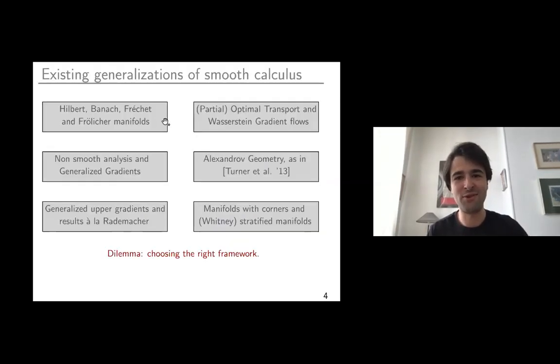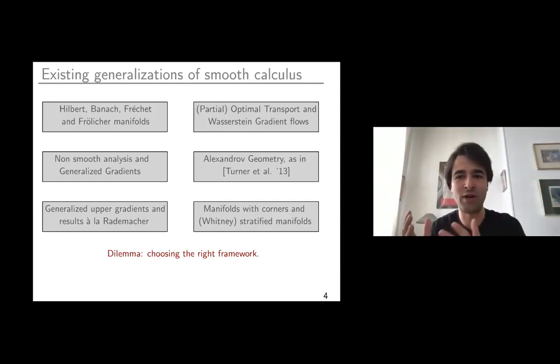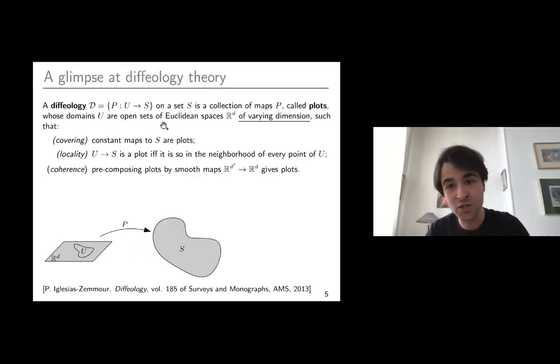If we're going to generalize finite dimensional smooth calculus to barcodes, there are already wonderful theories that do that. You have some examples - optimal transport and Wasserstein gradient flows, Alexandrov geometry which has been used to compute Fréchet means of persistence diagrams. But I don't want to make any choice here. Those theories are great, and if I make a choice I would have to justify why not the others. Ideally, we want the choice to be made canonical. The differential calculus should be made canonically for us on barcodes.